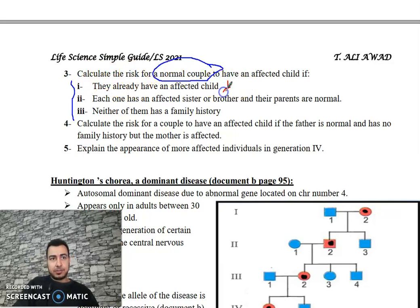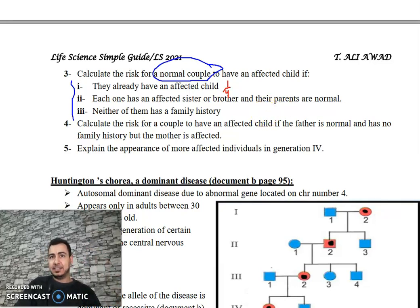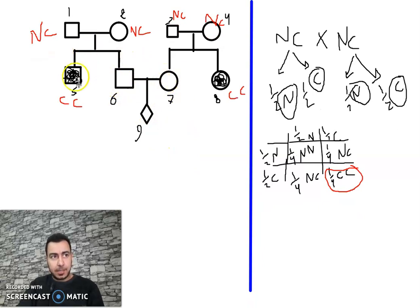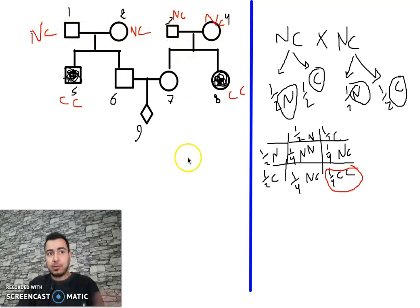Question 2: Calculate the risk for a normal couple to have an affected child if each of them has an affected sibling and their parents are normal. Drawing the pedigree: individuals 6 and 7 are the normal couple; individuals 5 and 8 are their affected siblings (CC) since this is autosomal recessive; parents 1–2 and 3–4 are all normal, so they must be NC.